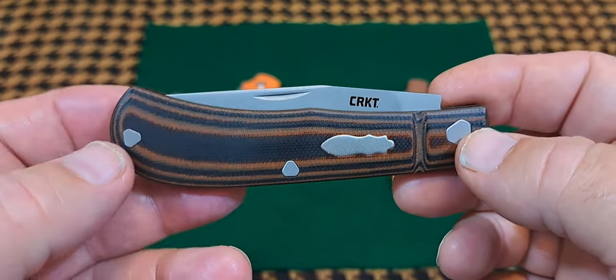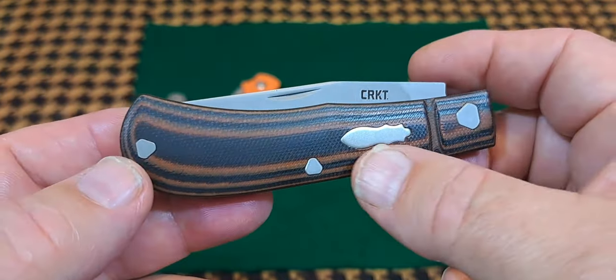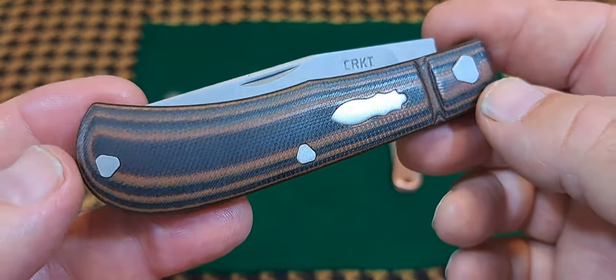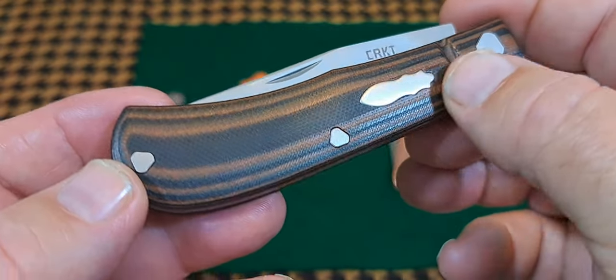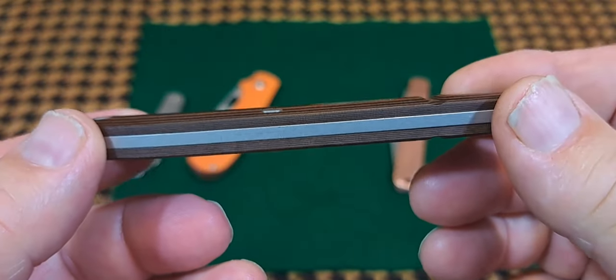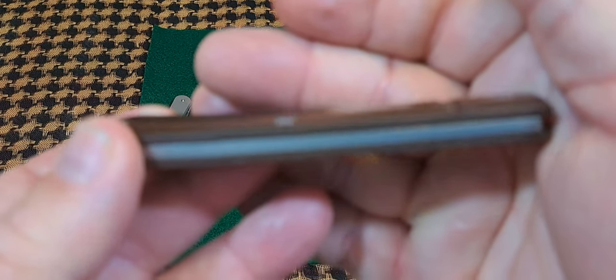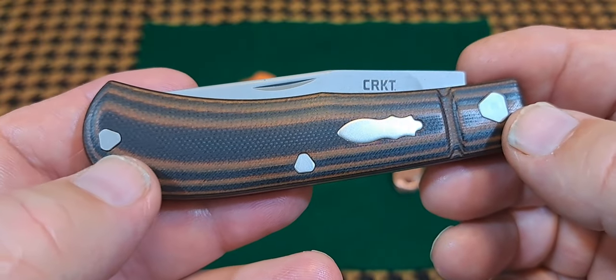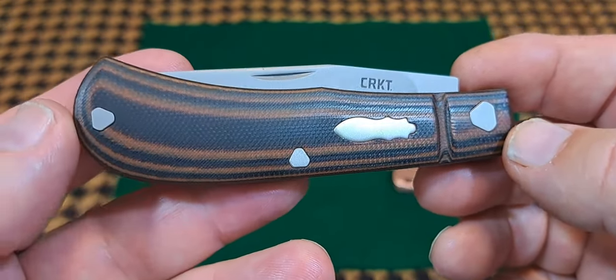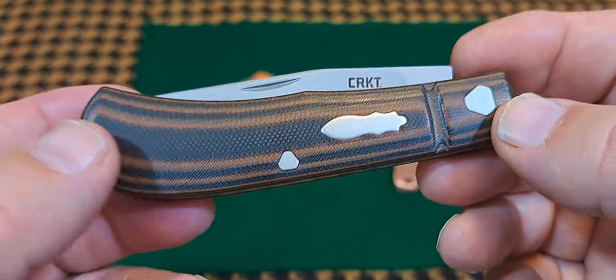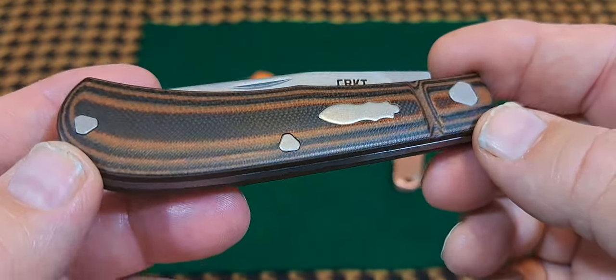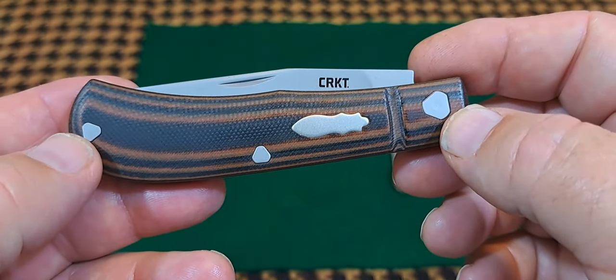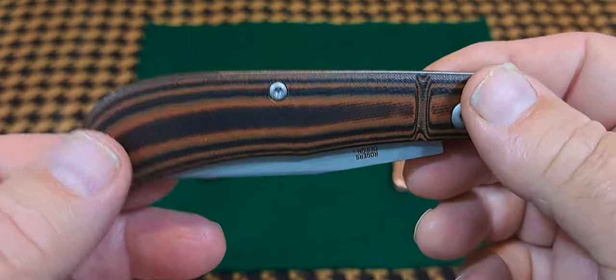If you look at this knife, it has a vintage design, an old saddle horn design, but that's where the old stuff stops. You can see here it has G10 scales, a compressed fiberglass in resin material that's impermeable to water, oil, blood, and highly scratch resistant. The scales on this knife should last forever, and you can see it has really cool design pins in it.